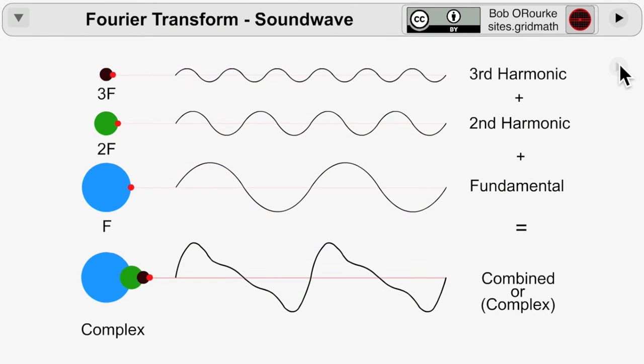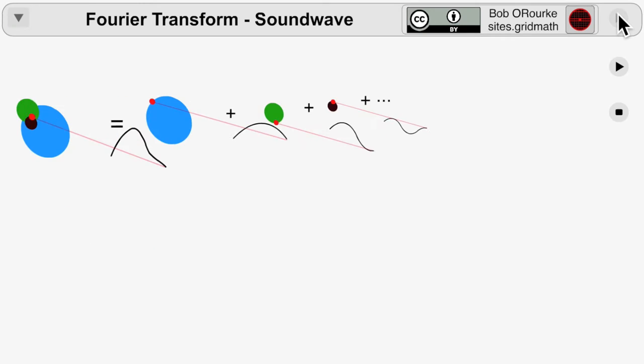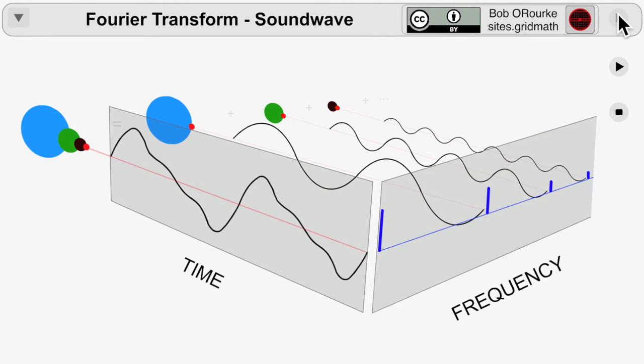You add up the harmonic multiples to get the complex sound wave. The radius of these circles is what counts and you get that by the Fourier transform. It's a multiplication process the way I'm looking at it.